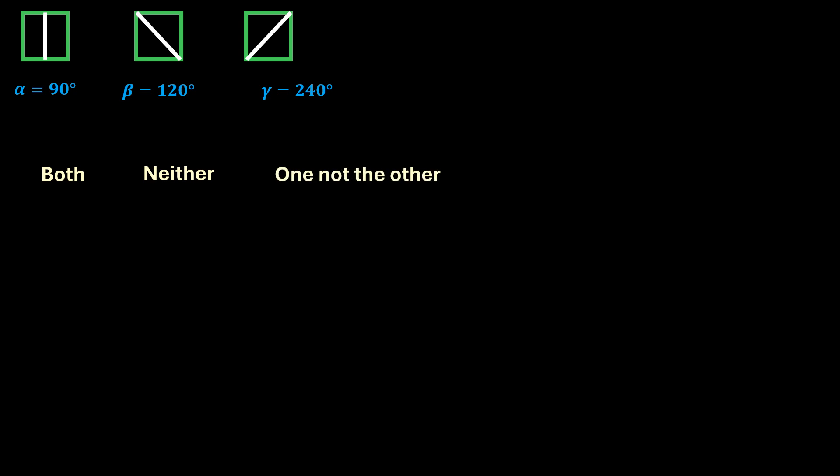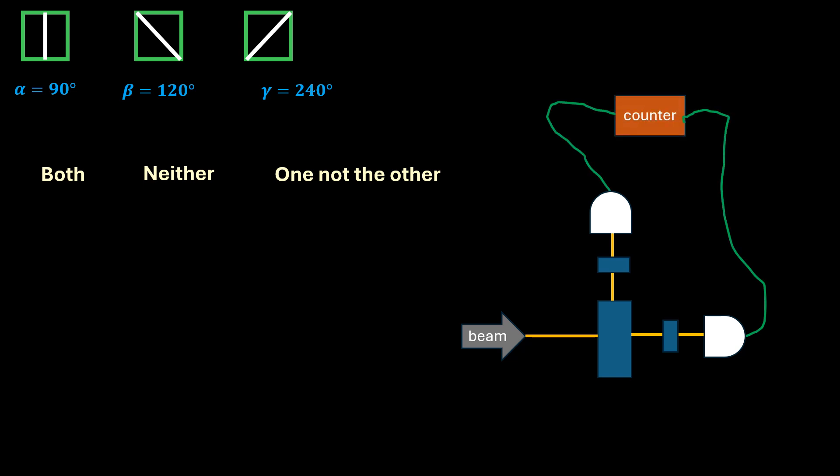You have to understand how the Bell's experiment is set up and what it measures. You have a beam of photon passing through a special type of filter that occasionally splits a photon into two identical photons. Each of these photons reach a detector and are detected. These detectors are connected to a counter which counts the number of coincidences.